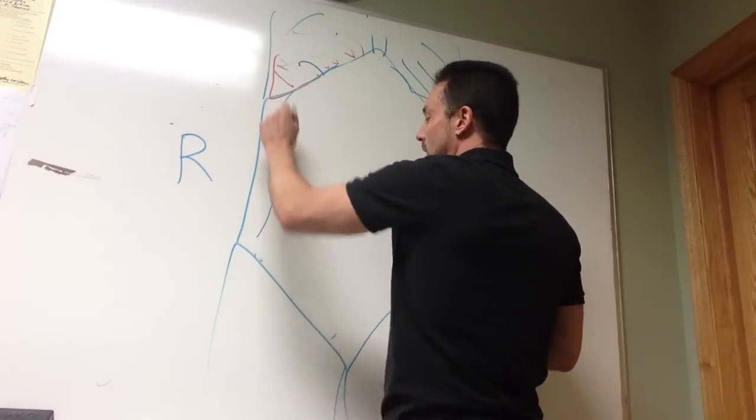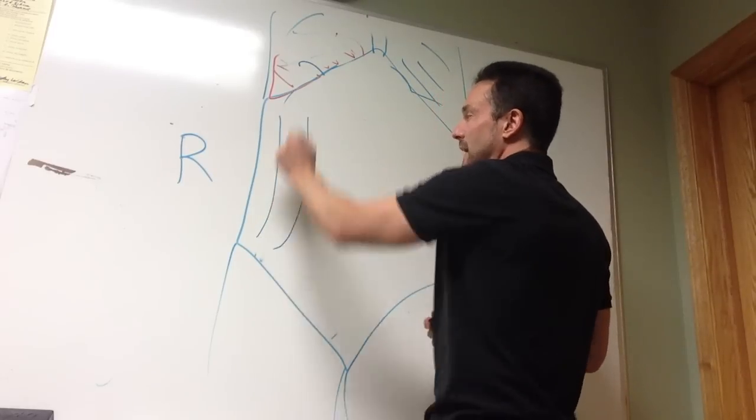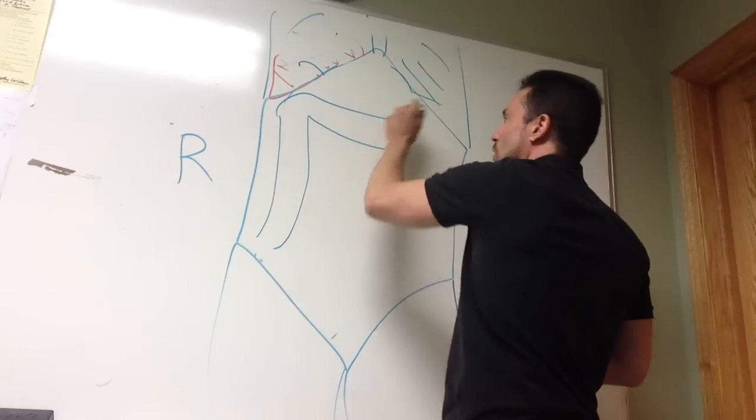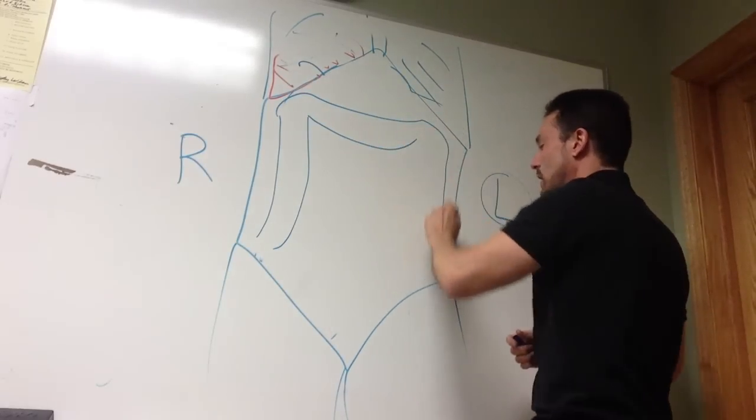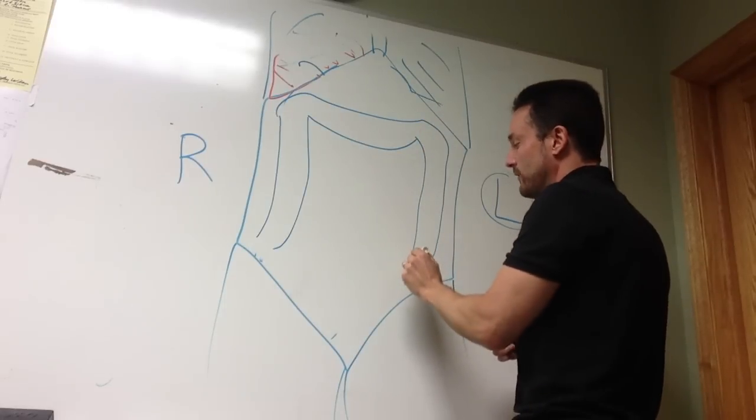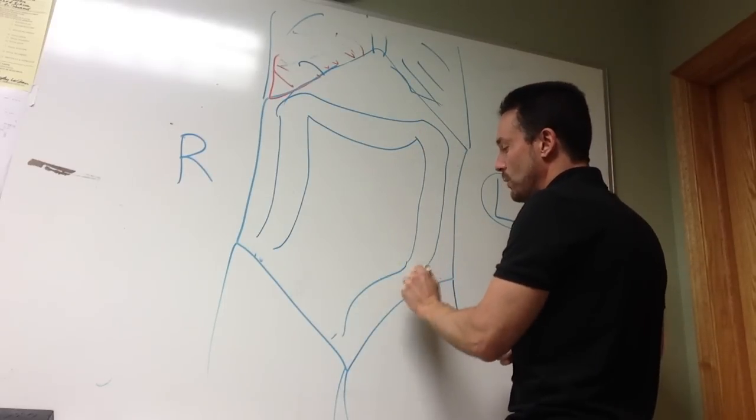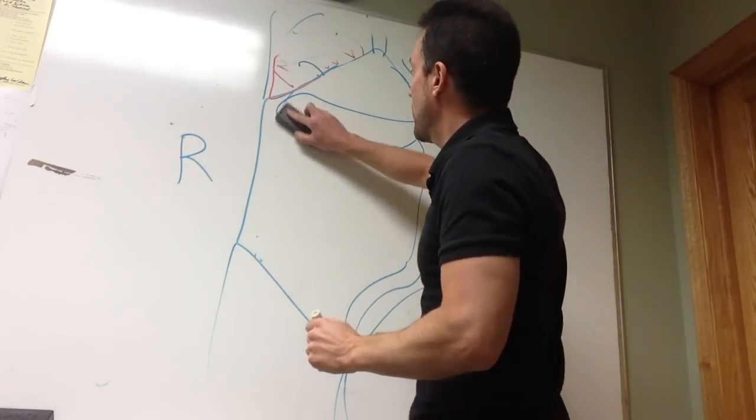So literally where your appendix is, is the start of your colon. That's called the ascending colon. You've got the transverse colon that comes across the right, and then the epigastric region. And then you have the descending colon, which hits the left upper quadrant and left lower quadrant. And then the sigmoid or S-shaped colon, which is in the left lower quadrant region. So there's a lot of overlap.